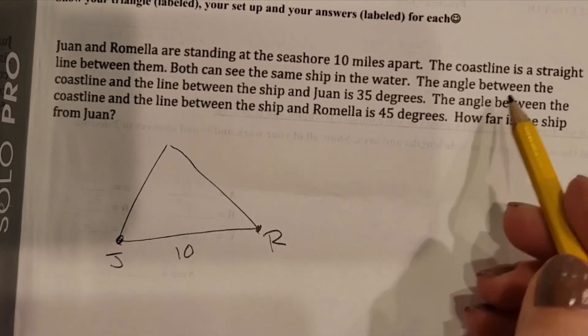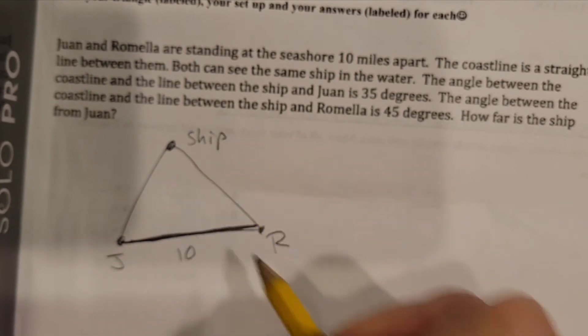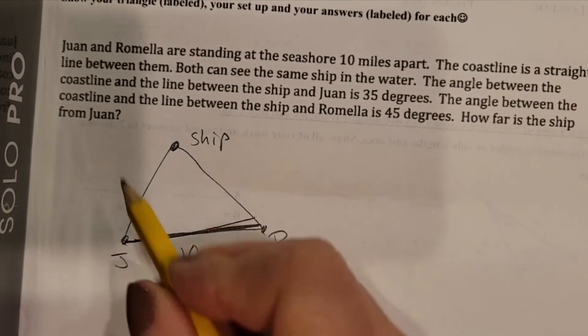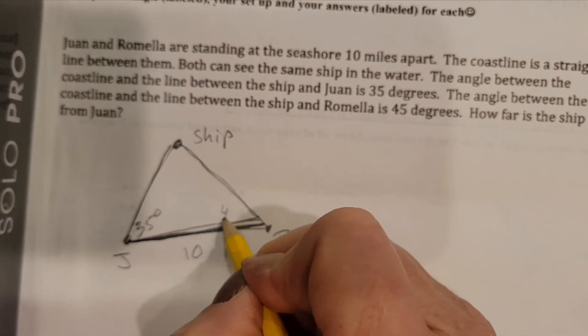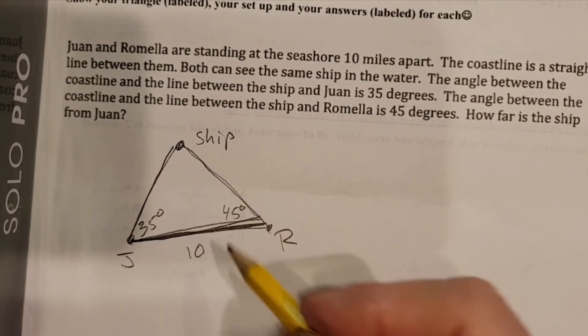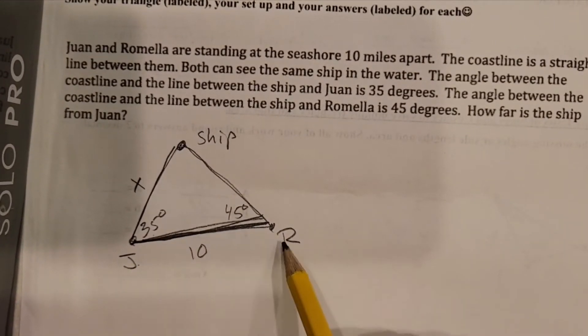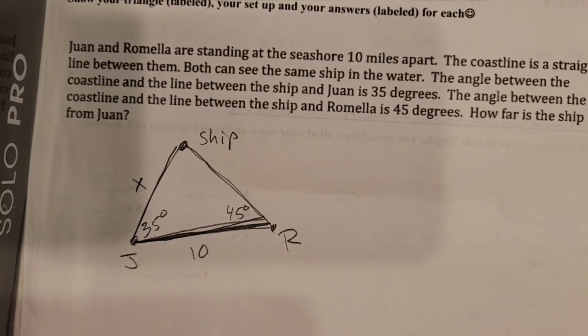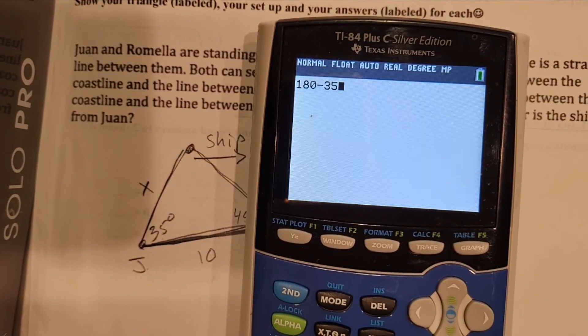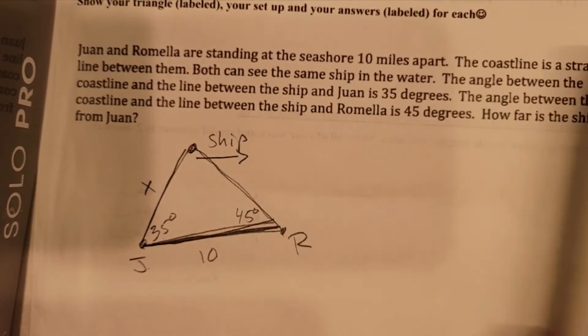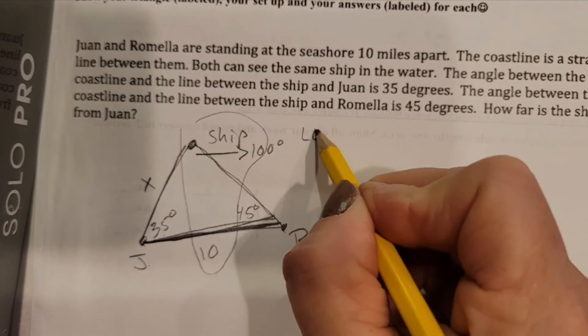I just have to fill in the rest of the information. The coastline is the straight line between them. So apparently this is the coastline. Both can see the same ship. Okay. So here is ship. The angle between the coastline and the line between the ship and Juan is 35 degrees. The angle between the coastline and the line between the ship and Romella is 45 degrees. How far is the ship from Juan? So this is my unknown. And it doesn't have to be drawn that way. It just has to have the 35 degrees by Juan, the 45 by Romella, the 10 between them, and so on. Then I decide, what can I use? Law of sines, law of cosines. I know two angles, so I already know that I can do this one doing 180 minus 35 minus 45, and I can find out that that last angle is 100 degrees. Shocker.